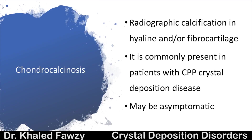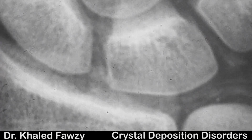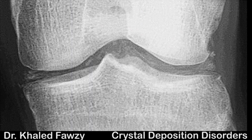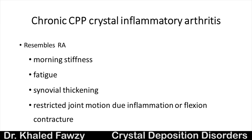Chondrocalcinosis is a radiological finding due to deposition of calcium pyrophosphate in the hyaline cartilage or fibrocartilage of the joints. It is commonly associated with calcium pyrophosphate crystal deposition disease but could be asymptomatic — just a radiological finding. On X-ray of the wrist it appears in the triangular fibrocartilage; on X-ray of the knee it appears in the hyaline cartilage and menisci.